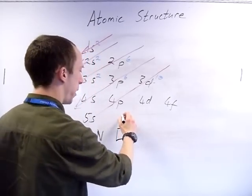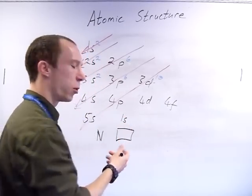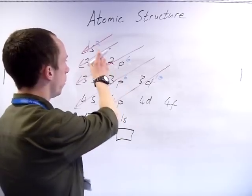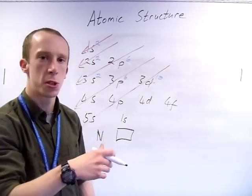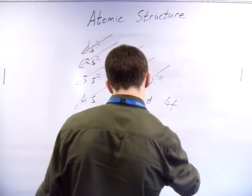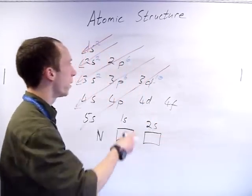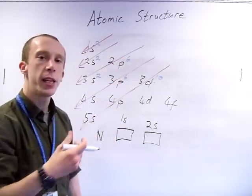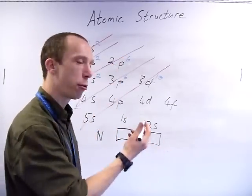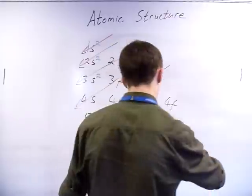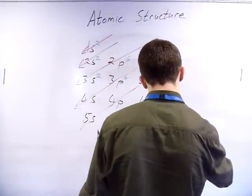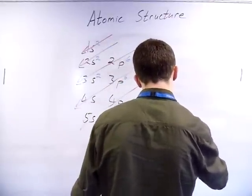If you imagine it: there's the one S - S has one orbital, one box. Move on to two S - S again, one box. Then P: P has three orbitals - Px, Py, Pz - so three boxes.